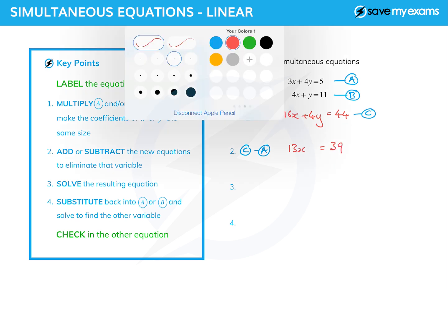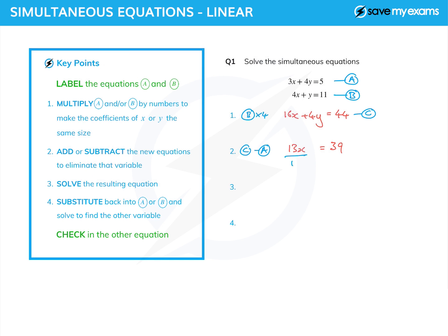And now, step 3. Solve the resulting equation. Divide both sides by 13. It's never a very difficult equation to solve. The 13s on the left cancel, and I get 39 over 13. And 39 over 13 is 3, which gives me one of my two answers. I need an answer for x and an answer for y.